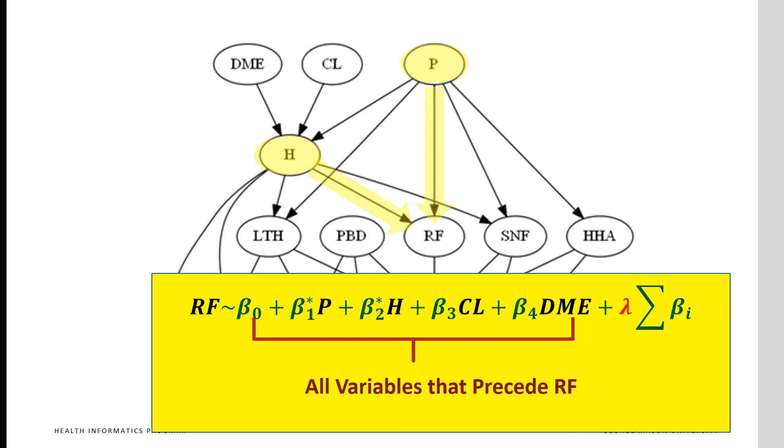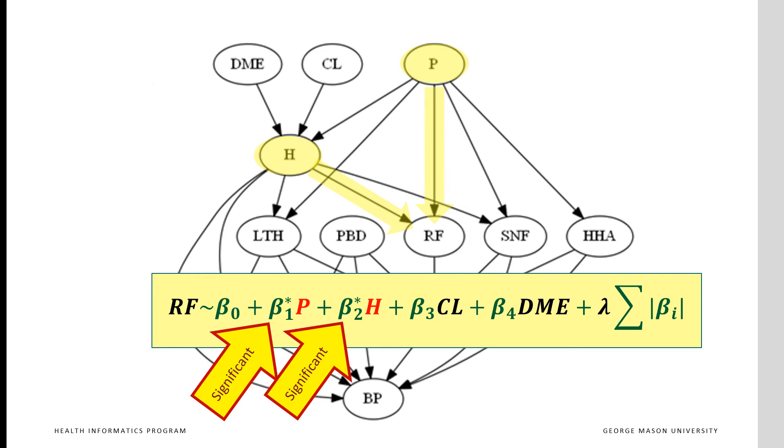The parameter lambda in red is multiplied by the sum of the other parameters. So when lambda is large, it drives the parameters to zero so that product of lambda and the parameters become smaller. Only H and P would have a significant relationship with RF. DME and CL are correlated with RF, but LASSO drops these variables in part because of intercorrelation among the variables. H blocks the effect of these two variables on RF.